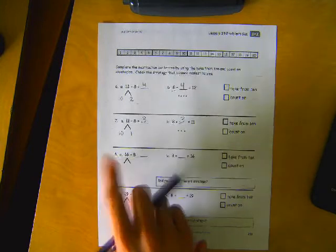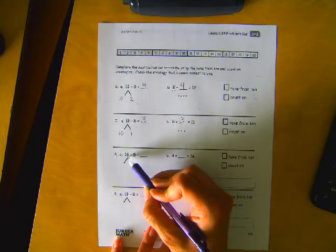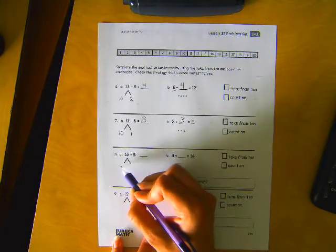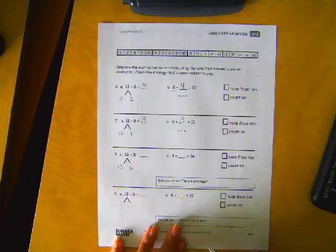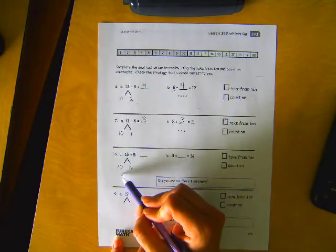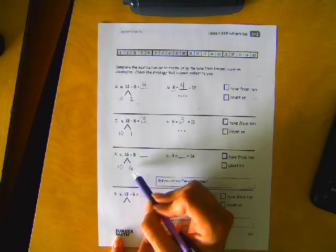How about number 8? 16 minus 8 equals blank. 16 can be broken up into a 10 and 6 ones. Take 8 from 10. That would leave us with 2 and 6. 2 and 6 is 8.